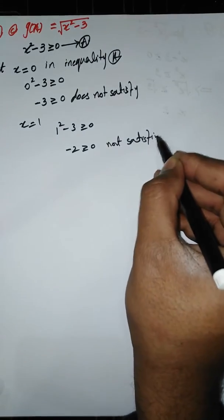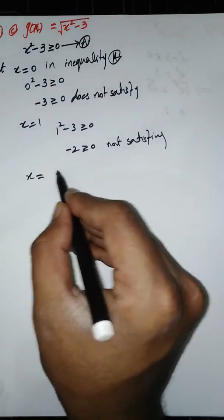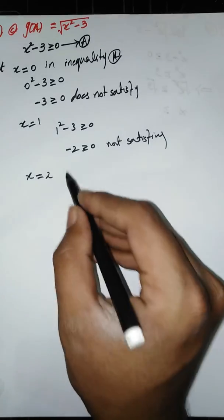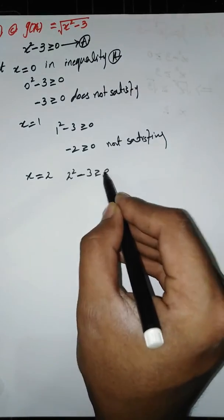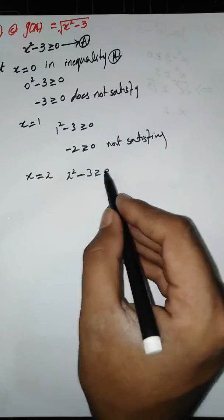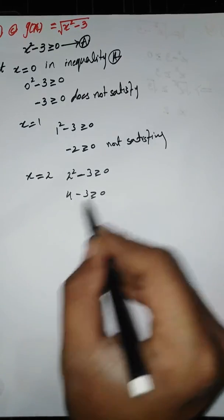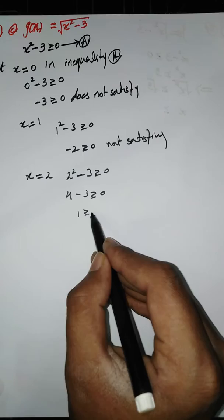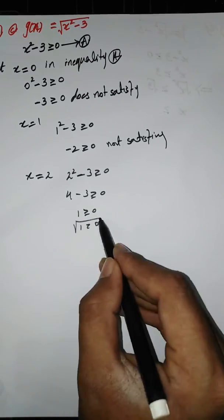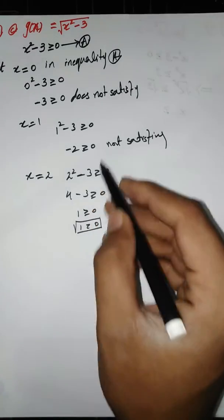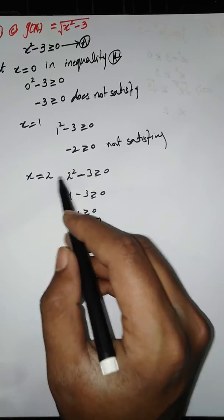When we take X equals 2, then 2 squared minus 3 equals 4 minus 3, which is 1, and 1 is greater than or equal to 0. So this inequality holds for X equal to 2.